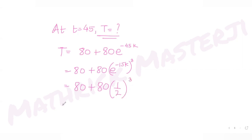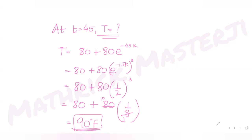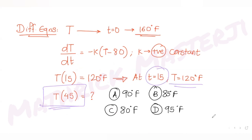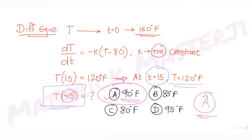We already know e raised to minus 15k equals 1/2, so (1/2) cubed equals 1/8. Therefore T equals 80 plus 80 times (1/8), which is 80 plus 10, giving us 90 degrees Fahrenheit. Looking at the answer choices, option A — 90 degrees Fahrenheit — matches. So the correct answer is option A for temperature at time t equals 45.